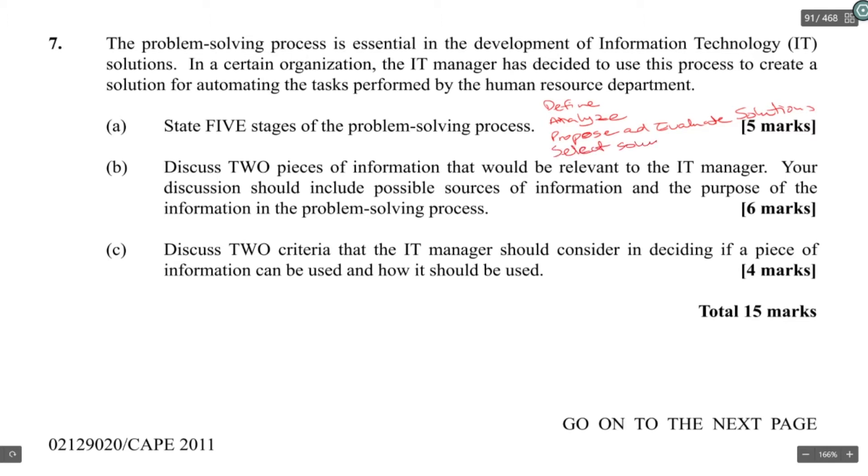Discuss two pieces of information that would be relevant to the IT manager. Your discussion should include possible sources of information and the purpose of the information in the problem-solving process. So two pieces of information. You have to get in your mind how a human resource department would work. So you would need to know like the size of the department, because you would need to know how many processes you need to automate.